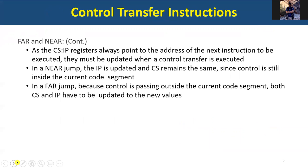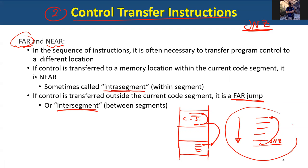In the near jump scenario, the program executes sequentially until it reaches a jump instruction, then goes back to an earlier instruction to repeat execution until some condition is no longer satisfied, and then continues sequentially again.